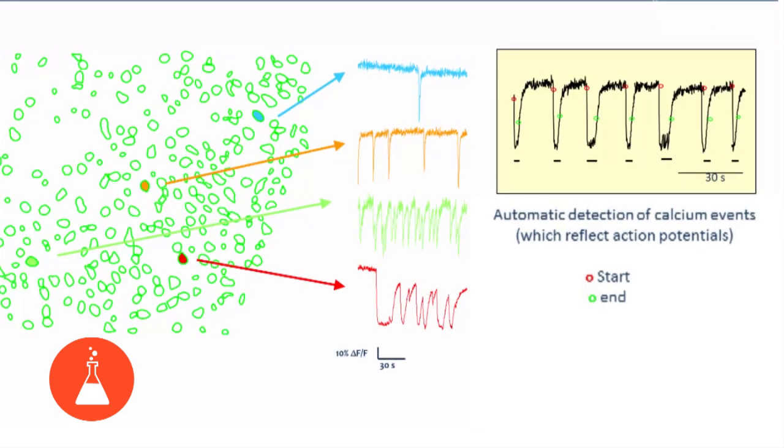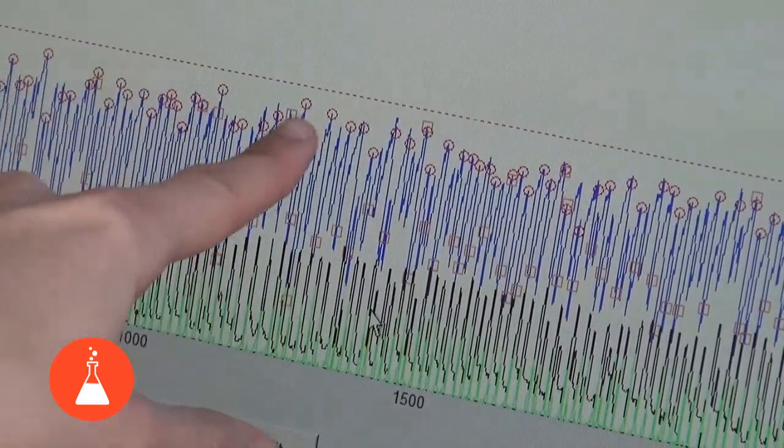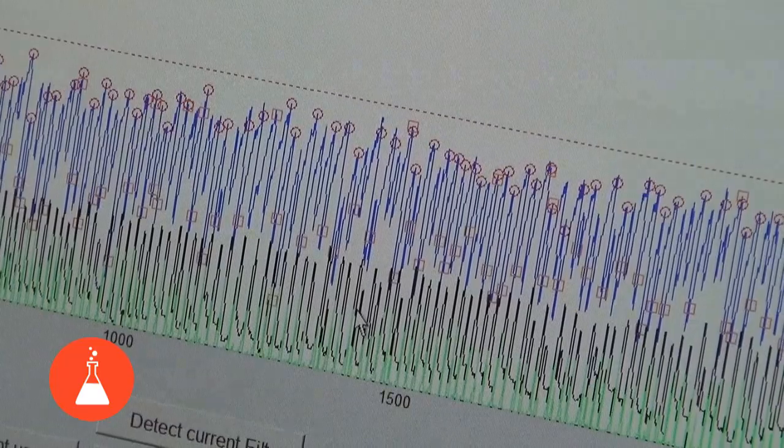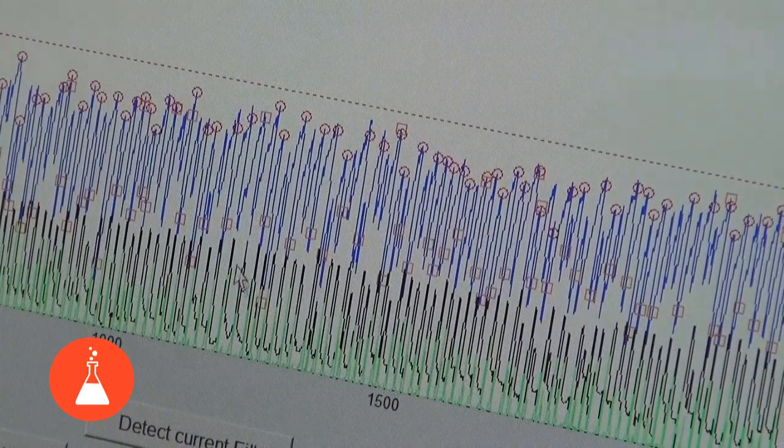The software enables us to analyze in detail each variation of every neuron over time. In fact, the program automatically places small round markers at the start and small square markers at the end of each calcium fluorescence event or variation.